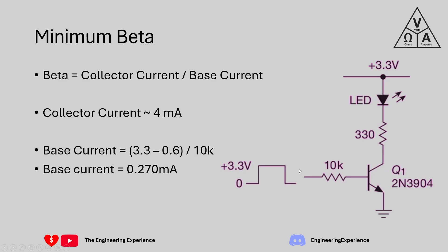We can calculate the base current: we have a 3.3 volt driving signal, and we assume a 0.6 volt diode voltage drop across the PN junction of the NPN transistor base-emitter. So the base is at 0.6 volts. The voltage drop across the 10K resistor is 3.3 minus 0.6 volts, and the base current is 2.7 volts divided by 10 kilo ohms, giving 0.27 milliamps. Plugging into the beta equation gives a minimum beta of 14.8 - so any transistor with HFE above 14.8 will work, which is most transistors.